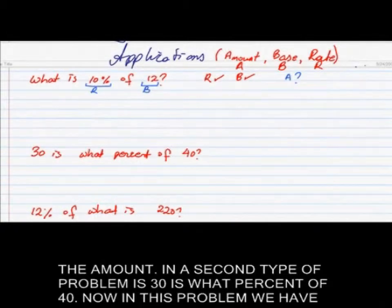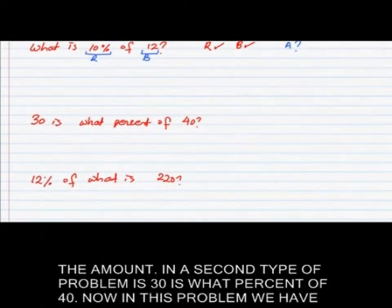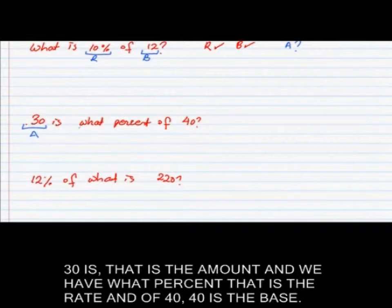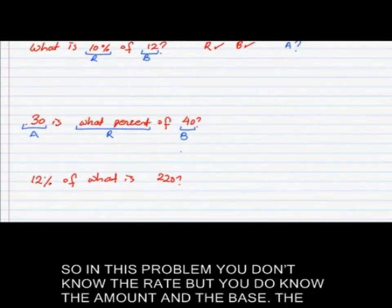In a second type of problem: 30 is what percent of 40? In this problem, 30 is the amount, what percent is the rate, and 40 is the base. So in this problem you don't know the rate, but you do know the amount and the base.